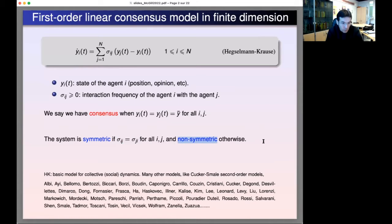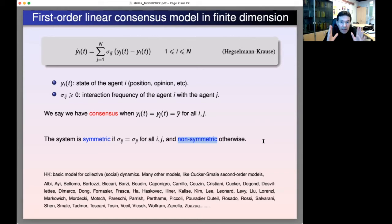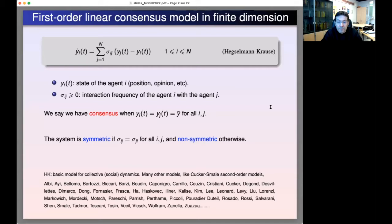The non-symmetric case is the particular focus of our work. Let me recall that Hegselmann-Krause models are well-known models in social dynamics, but of course there are many other models and variants of interest, such as the celebrated Cucker-Smale second-order models. Here I would like to raise the main ideas for the very simplest model, which is the Hegselmann-Krause model. At the bottom of my slides I have cited several authors who have contributed to collective dynamics, though the list is far from complete.